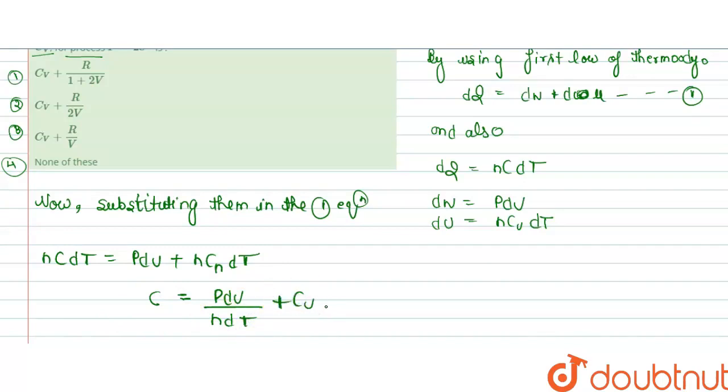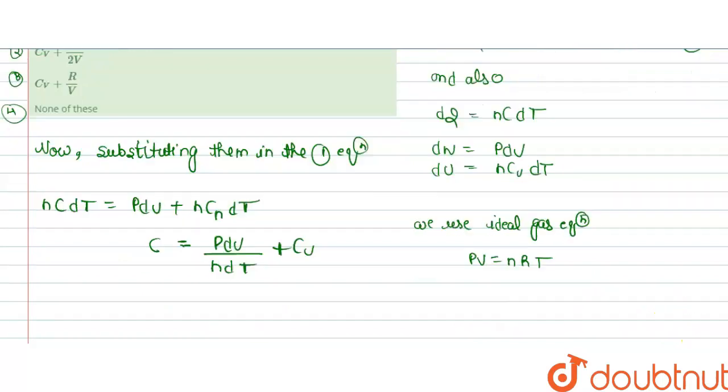To find out P dV upon n dT, we will use the ideal gas equation. PV equals nRT, and this is 2V e to the power 2V. Since P equals 2e to the power V according to the question, that equals nRT.